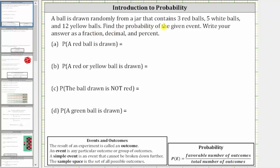A ball is drawn randomly from a draw that contains three red balls, five white balls, and 12 yellow balls. Find the probability of the given event. Write your answer as a fraction, decimal, and percent.